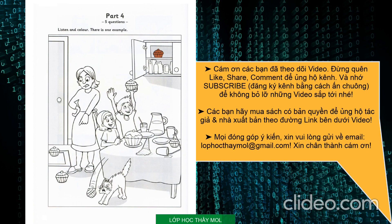5. Now, can you see the cake next to the girl's mother? Yes. She's pointing at it. That's right. Can you colour the cake blue, please? OK. I'm colouring it now. That's a very nice picture. Thanks.